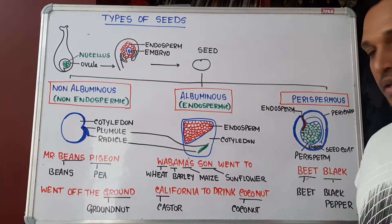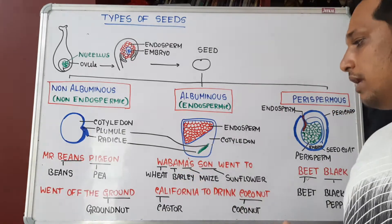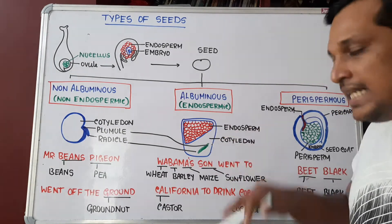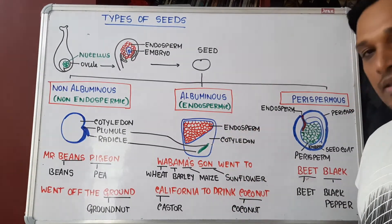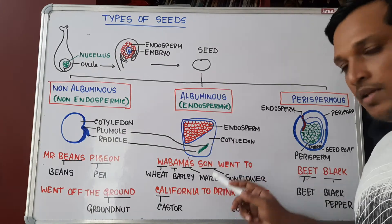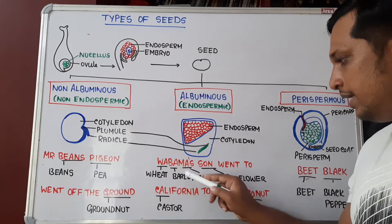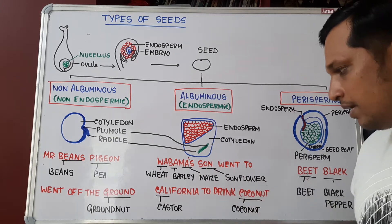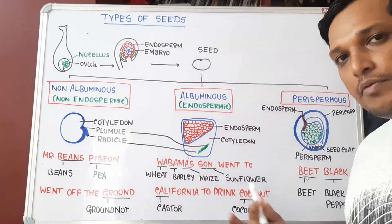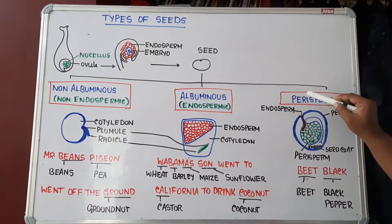Albuminous or endospermous seeds are seeds in which endosperm is retained even after the embryo develops. Even though the embryo is developing, endosperm remains at the periphery. For examples, the mnemonic is: 'Obama sun went to California to drink coconut' — W for wheat, Ba for barley, Ma for maize, sun for sunflower, California for castor, coconut — these are the examples given in the NCERT.